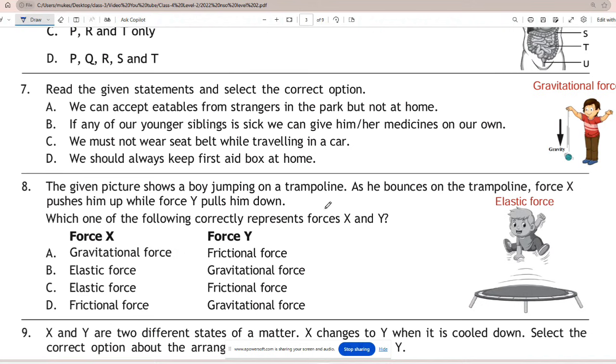Question 7: Read the given statements and select the correct option. The correct answer is D - we should always keep first aid box at home. Other options are incorrect like we cannot accept eatables from strangers, if any of our younger siblings is sick we should not give him or her medicines on our own, we must wear a seat belt while traveling in a car.